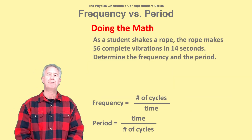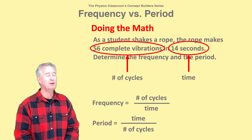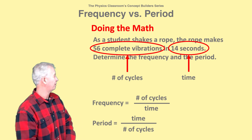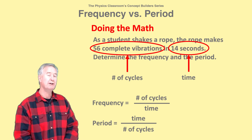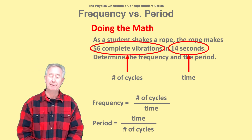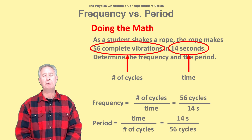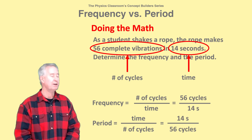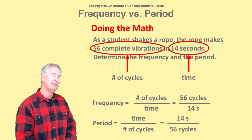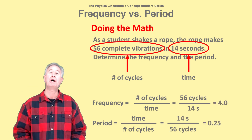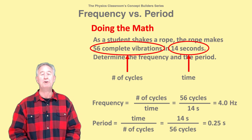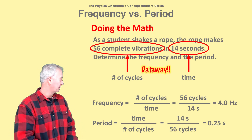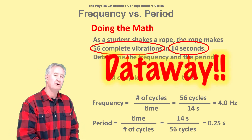To calculate frequency and period, look for information about the number of cycles or vibrations during the corresponding amount of time. Take the numbers and put them in the right spot inside the equation. Your calculator will help you determine the answer. When you're done, don't forget to include your unit.